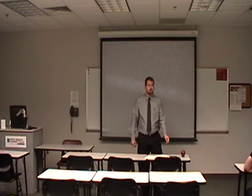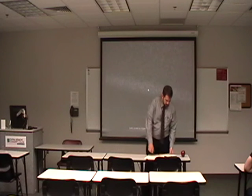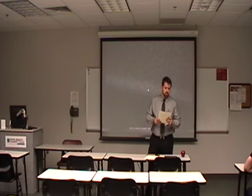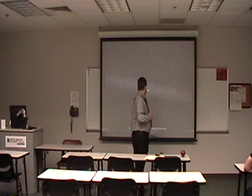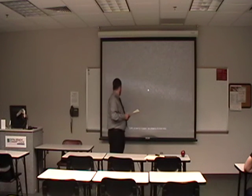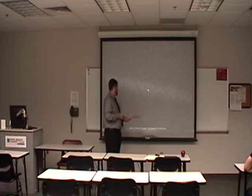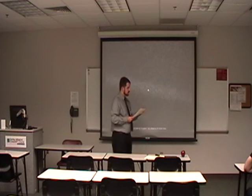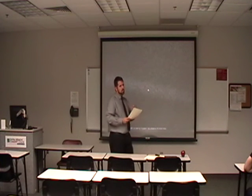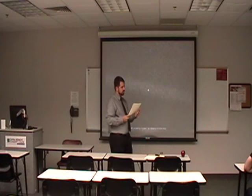I don't know how far over my time I am, but I'd like to end with something that Carl Sagan wrote. This is Earth as seen by Voyager 1 at a distance of 4 billion miles. This is called the Pale Blue Dot, and it puts our place in the universe into perspective.